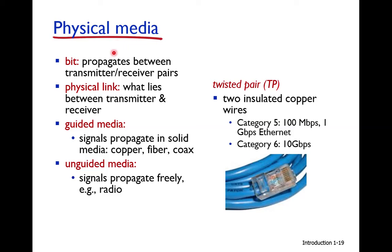Physical media can be divided into two types: guided media and unguided media. Guided media is also called wired media — the signal propagates through solid media such as copper wire, fiber optics, or coaxial cable. In unguided media, also called wireless, the signal propagates freely through air, moving in all directions depending on the transmission antenna.